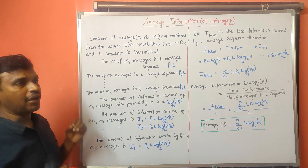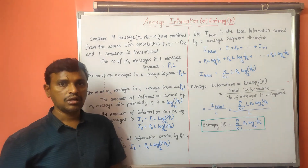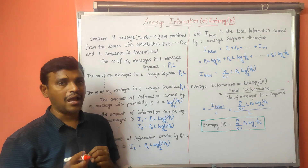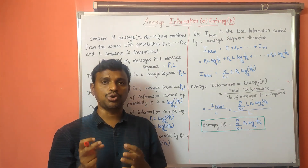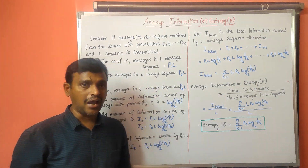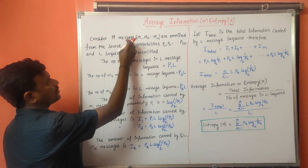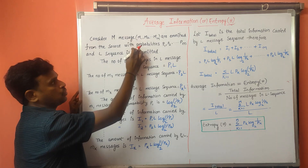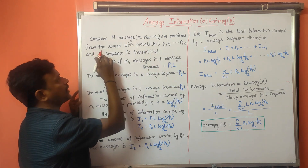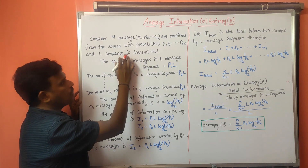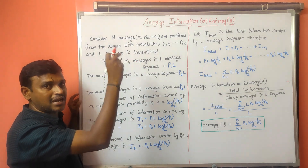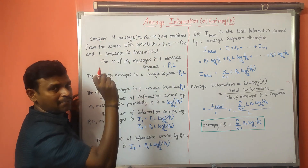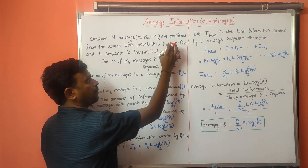To derive that formula, I will consider a source that will emit m messages — m1, m2, and so on mm — with probabilities p1, p2, and so on pm. Consider m messages emitted from the source with probabilities p1, p2, and so on pm, and an L-length message sequence is transmitted.